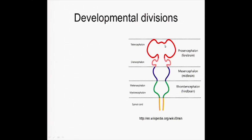The telencephalon and diencephalon produce most of the cerebrum. Then the mesencephalon, which is the midbrain — that's where we're looking at the inferior colliculus, right around that fourth ventricle. And then the rhombencephalon, which is the hindbrain, which includes the medulla, and then onto the spinal cord.